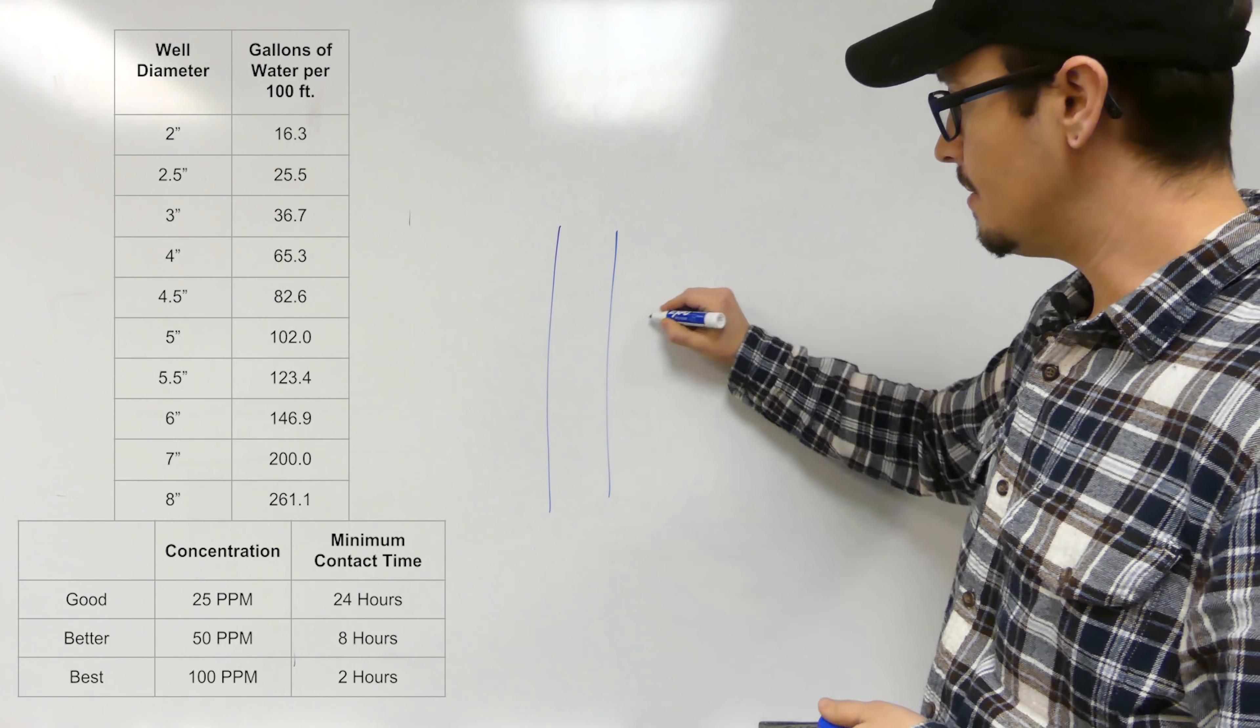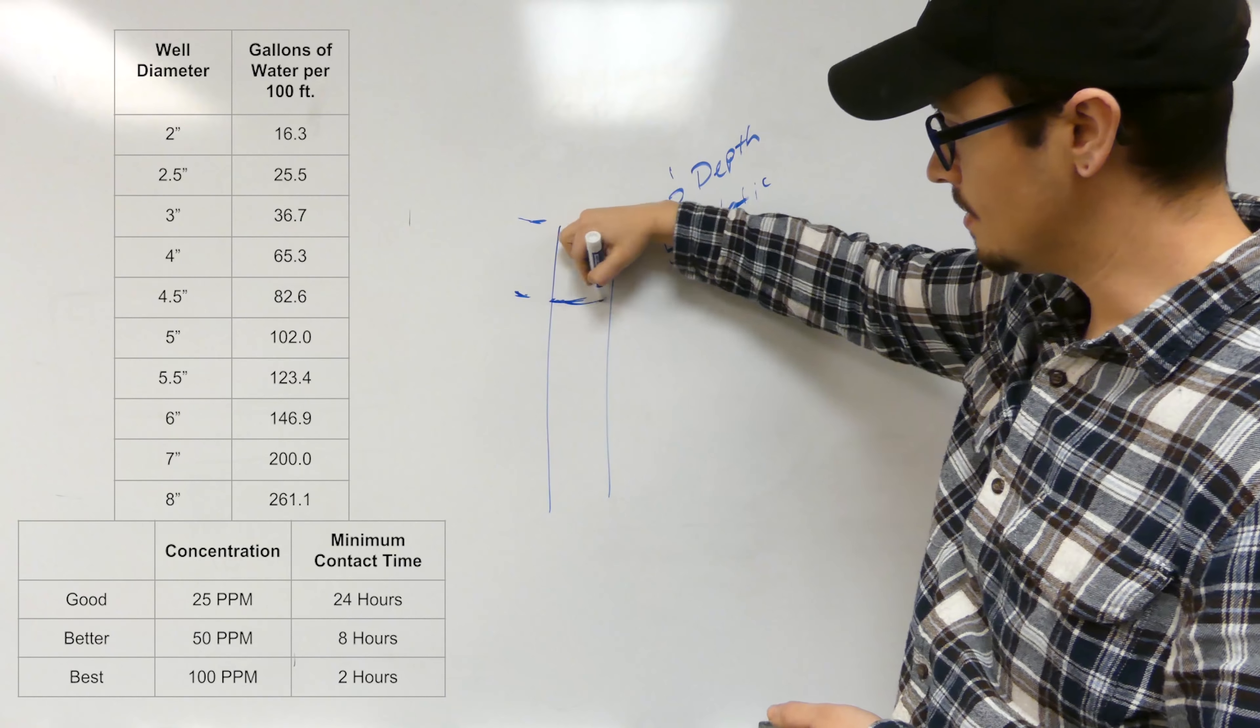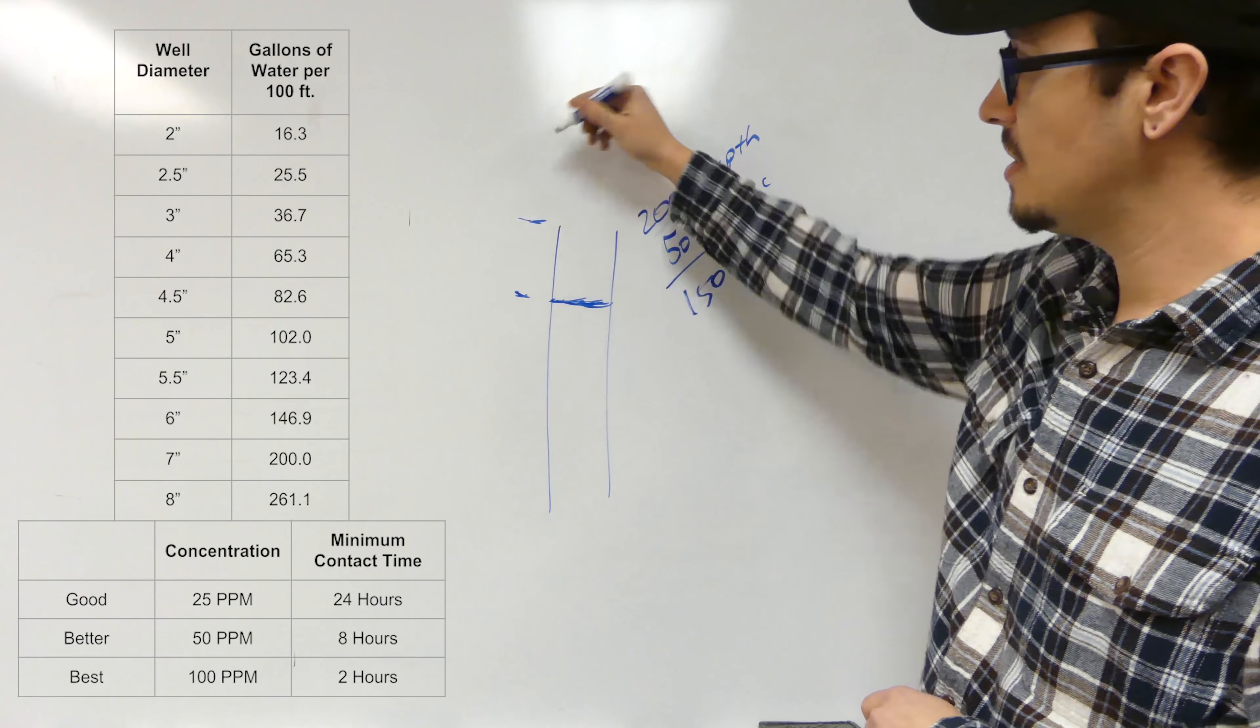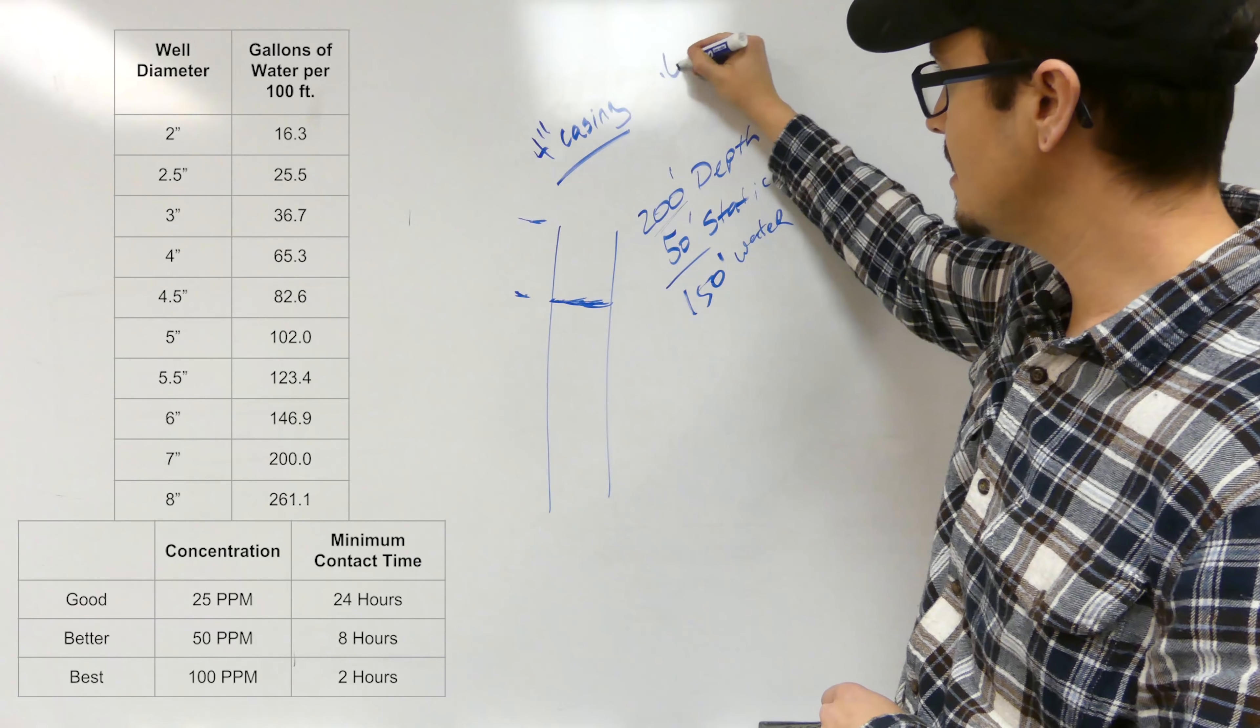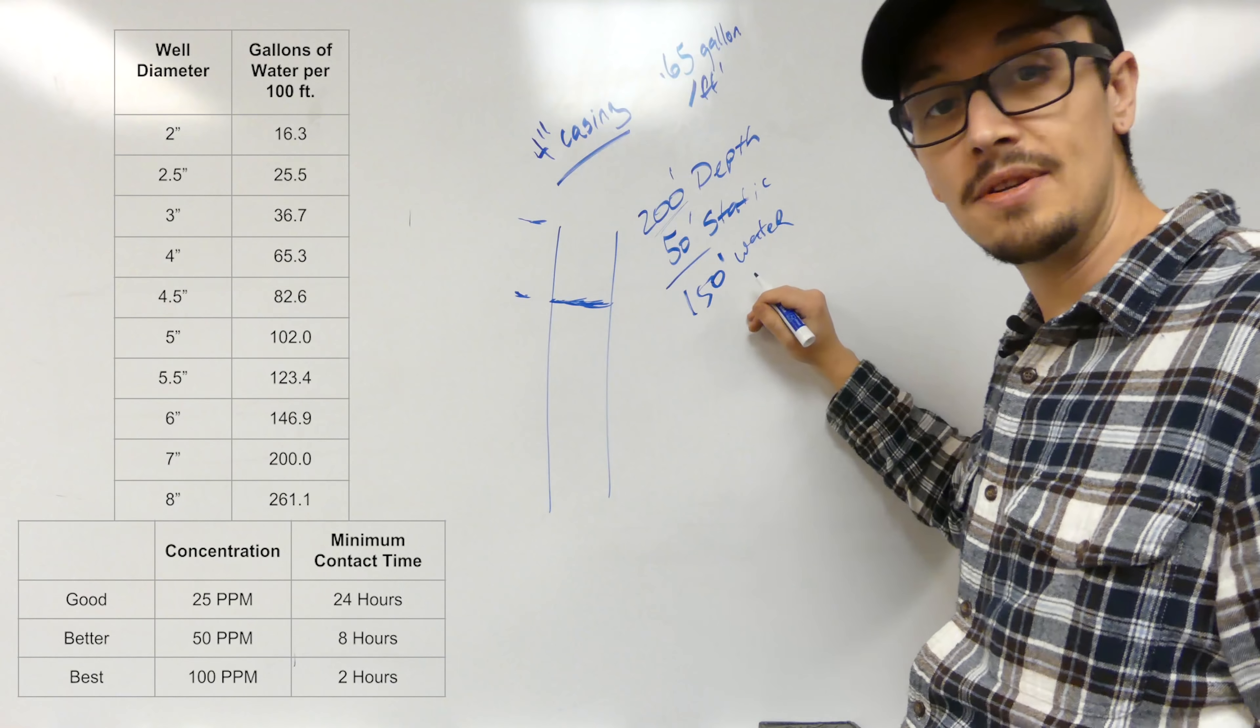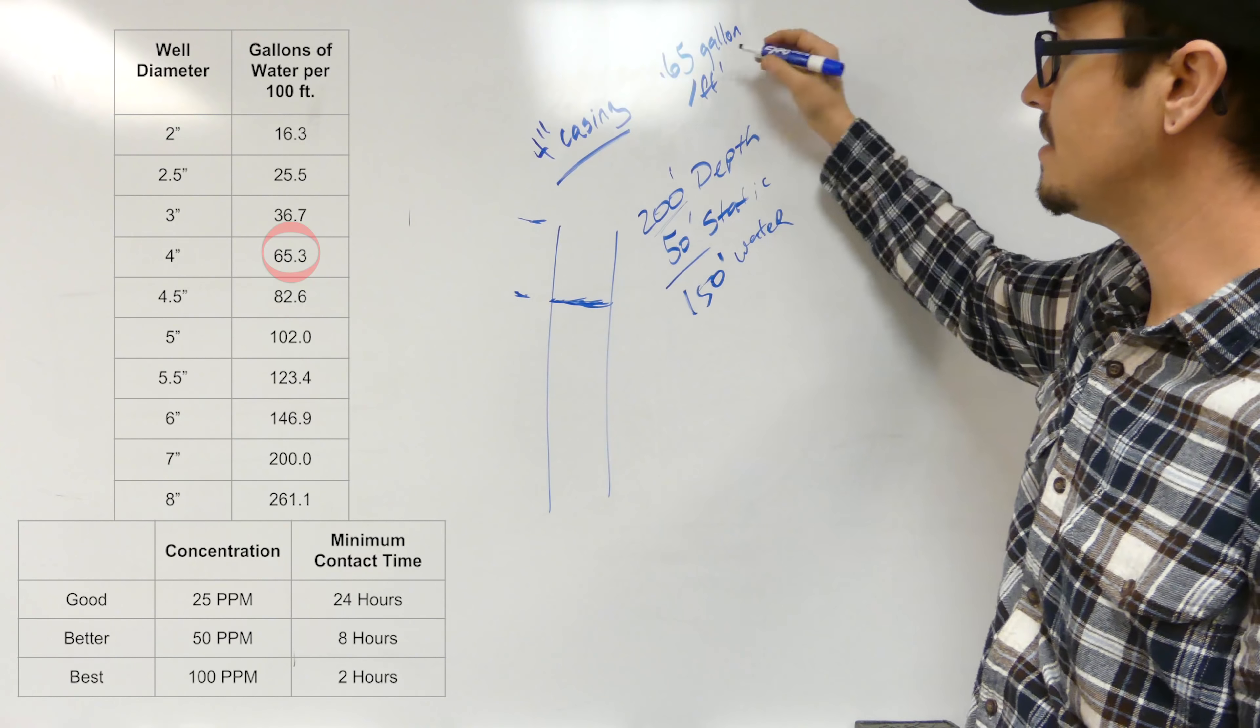Let's jump right into calculating it, just so you get an example. Let's say we've got a well here and it's 200 feet deep. We have 50 foot of static, which is the distance from the top of the well until we hit water. We know we've got 200 minus 50, we've got 150 feet of water. For the sake of easy math, this is a 4 inch casing. A 4 inch casing holds 0.65 gallons per foot. We just simply take 0.65, multiply that by 150, and then we're going to know exactly how many gallons we've got in the well. We want to factor the entire depth of the well, not just the pump depth. We're doing the whole thing.